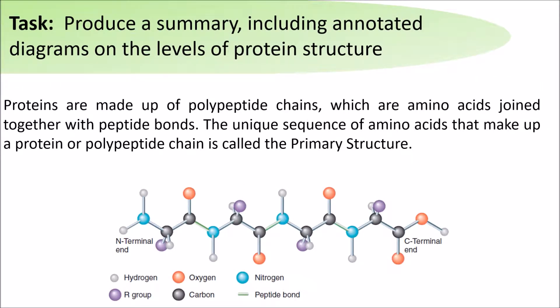Proteins are made up of polypeptide chains, which are amino acids joined together with peptide bonds. The unique sequence of amino acids that makes up a protein or polypeptide chain is called its primary structure.